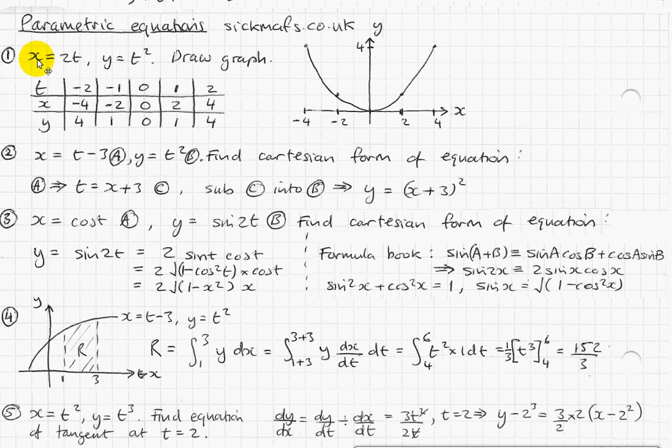It doesn't have to be that. Basically, x and y both have to be dependent on t or a function of t, whatever that happens to be. Here are more parametric equations like x equals t minus 3 and y equals t squared.